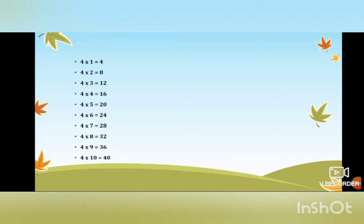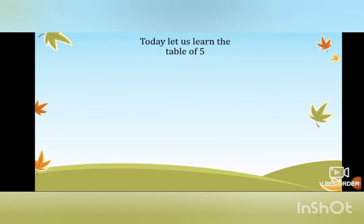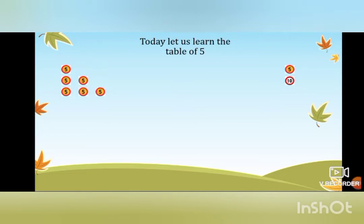Now after we have revised our tables from one to four, let us learn the table of five. Before we do that, let's understand it. We have the number five written one time, and so we know it as five. Every table is just an addition of its number. Five written two times — when you add five and five, we get ten. Five written three times — when you add it, you get fifteen.